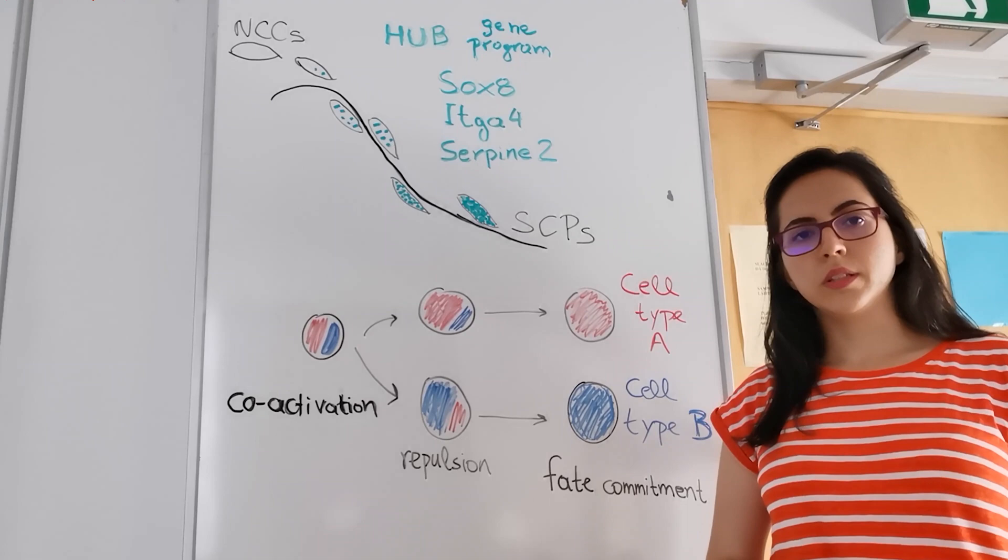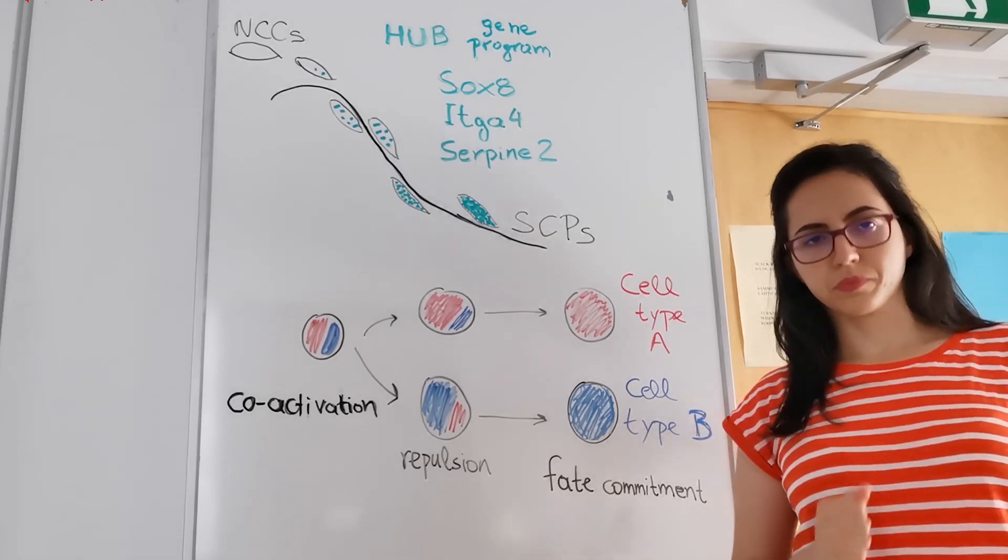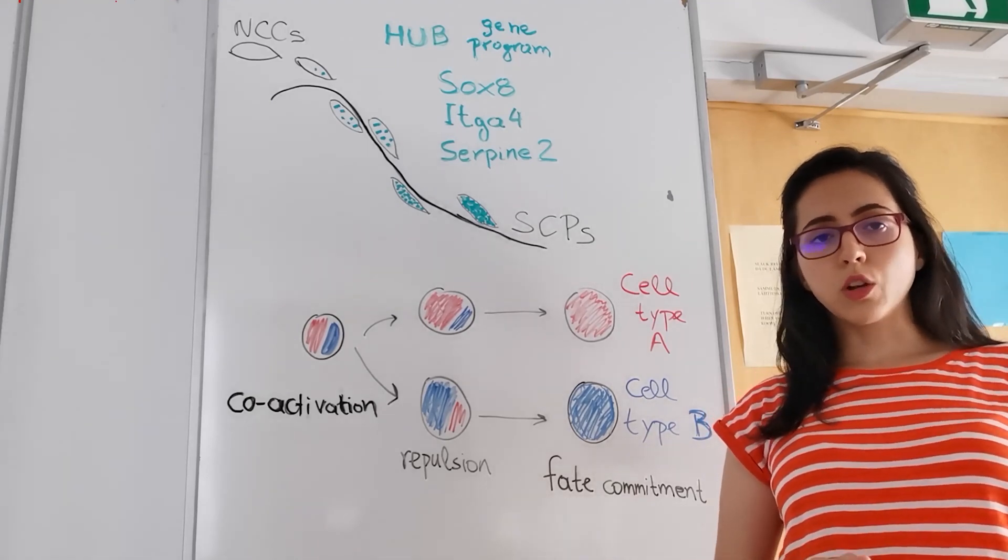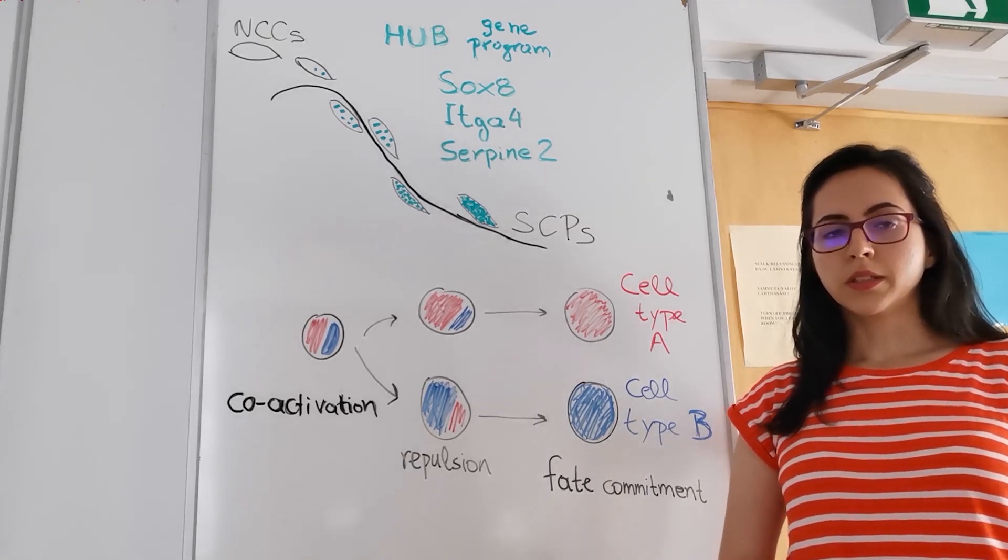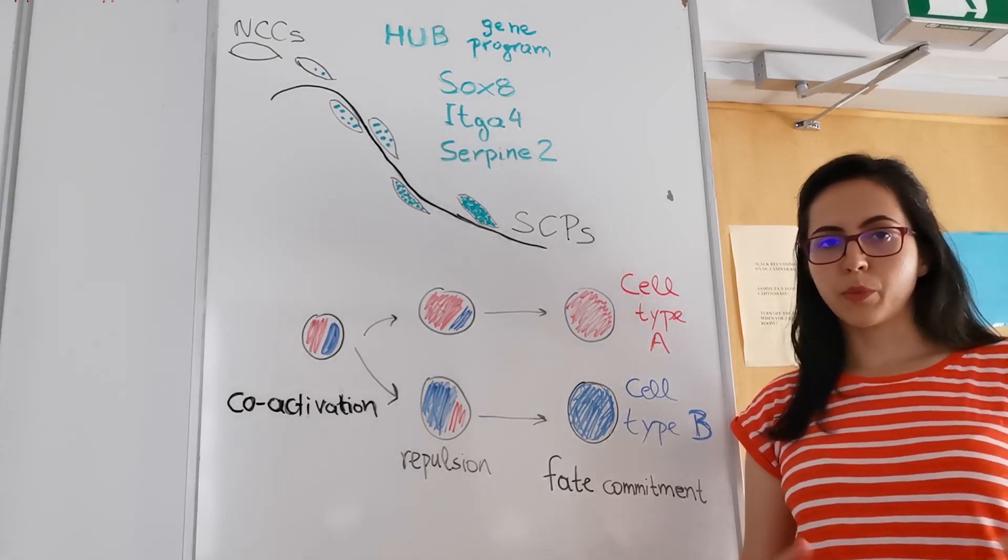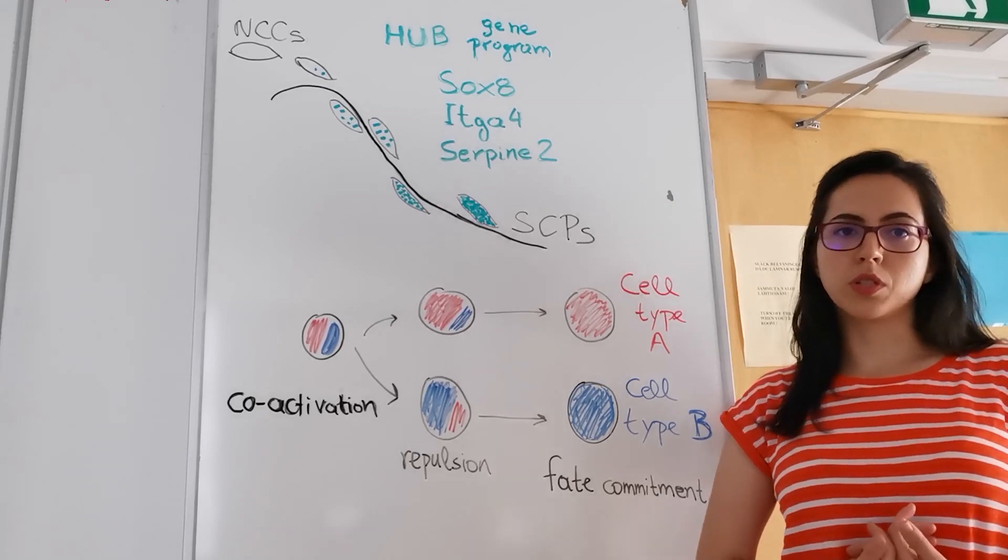Last but not least, we identified the transcriptional profile of the developing neuromuscular junction glia, which is a great resource to the community. Taken together, our results are examining the Schwann cell precursor multipotency that works under a new light. Now we have a brand new light.